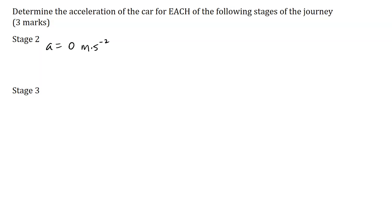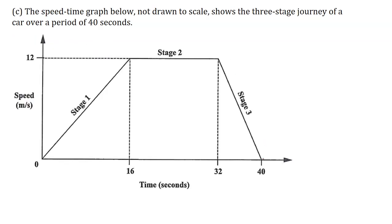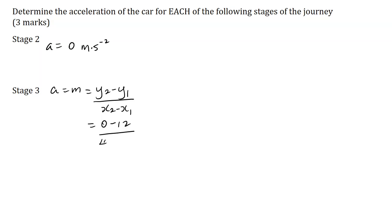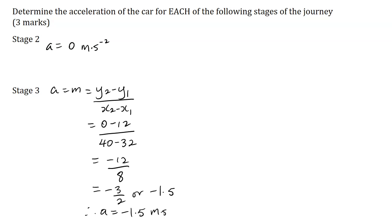Stage 3: I will identify the coordinates of two points — this will be (40, 0) and (32, 12). I'll use those two points to calculate the gradient. The acceleration equals the gradient equals y2 minus y1 over x2 minus x1. Substituting: 0 minus 12 over 40 minus 32, which is minus 12 over 8, equal to minus 3 over 2, or minus 1.5. Therefore, the acceleration is minus 1.5 meters per second squared.